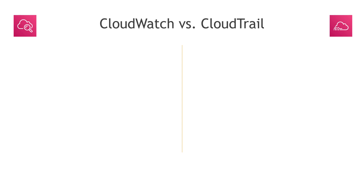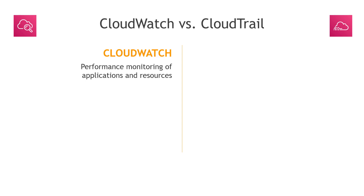Hey everyone! A quick video today about Amazon CloudWatch versus CloudTrail. It is easy to mix these up. CloudWatch is really used for performance monitoring of applications and resources — maybe you want to know what your CPU utilization is for an EC2 instance, or network in and network out, disk reads, GPU utilization, and so on.